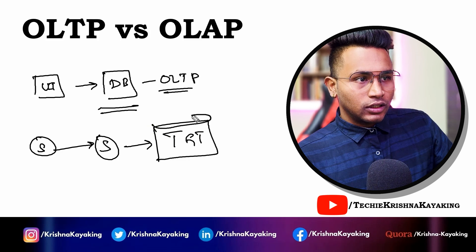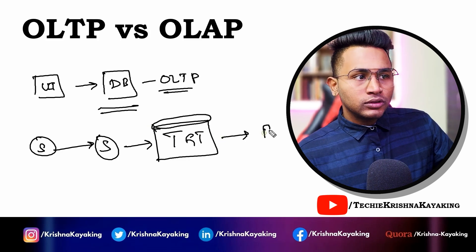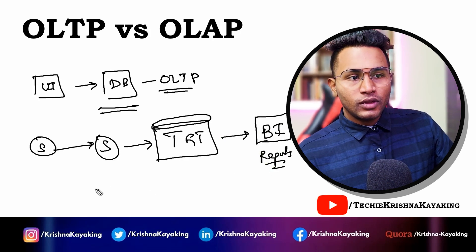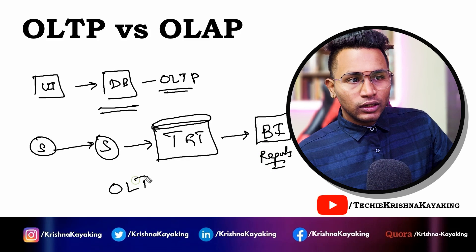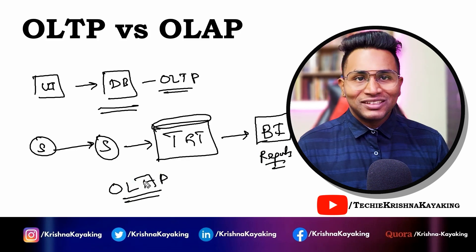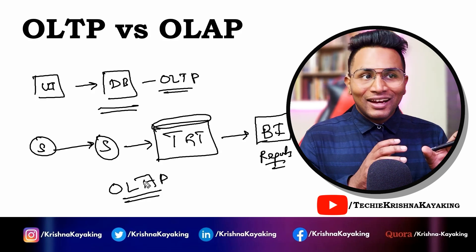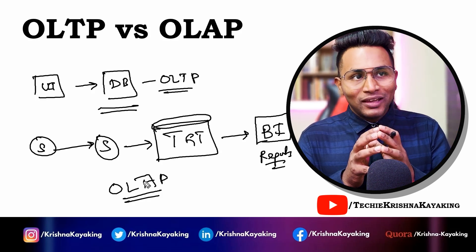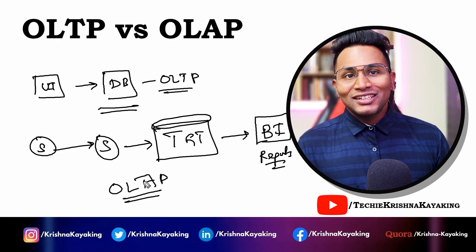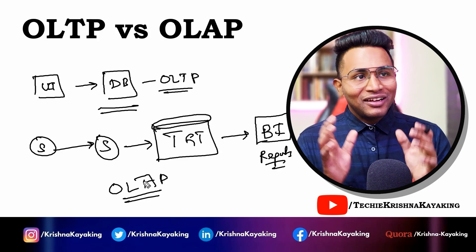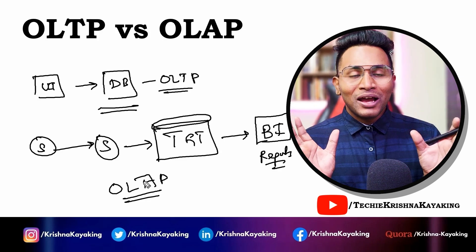From the data warehouse we can use any BI tool to get reports. This becomes the OLAP system — the Online Analytical Processing system — where the purpose is to analyze. The OLTP system is just for transaction and storing data. I hope this helps you understand what is OLTP and what is OLAP, and the difference between them.